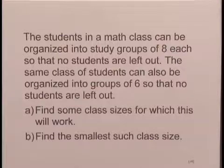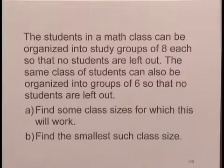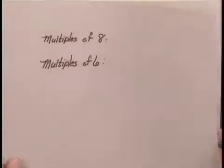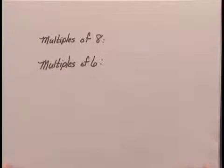Well, if the class of students can be organized into study groups of 8 each, this means that the class has to be a multiple of 8. And if it can be organized into groups of 6 each, the class size also must be a multiple of 6. So, let's list some multiples of 8, and some multiples of 6.